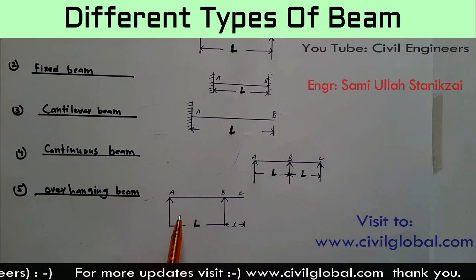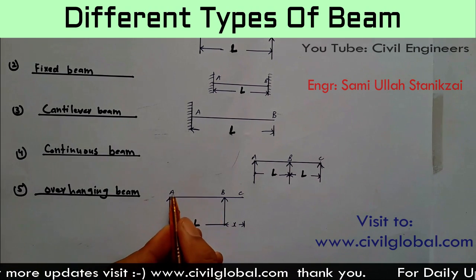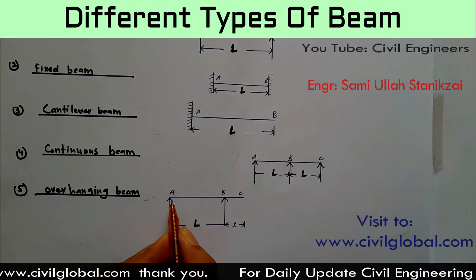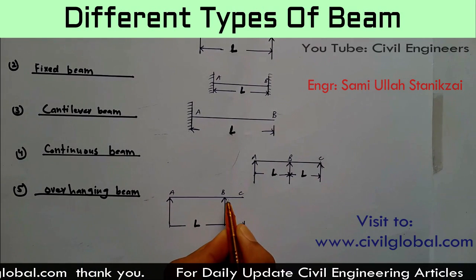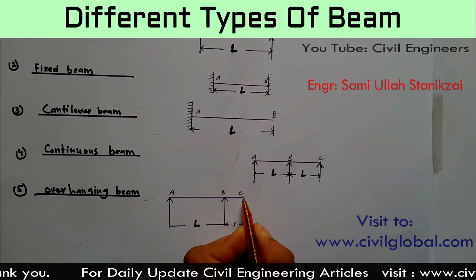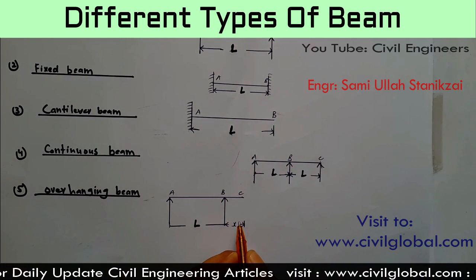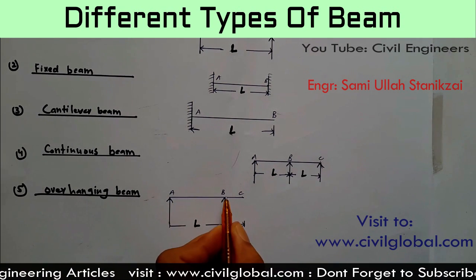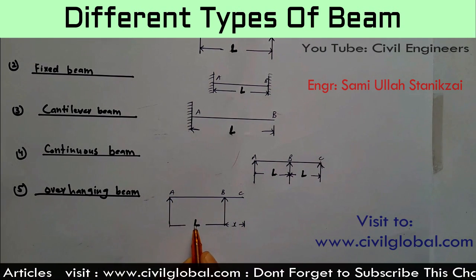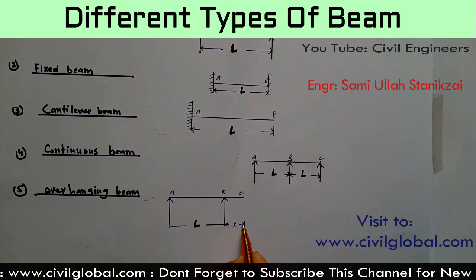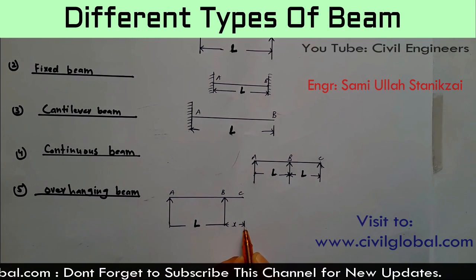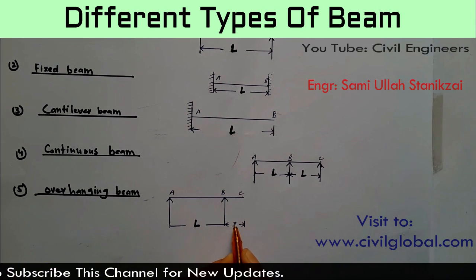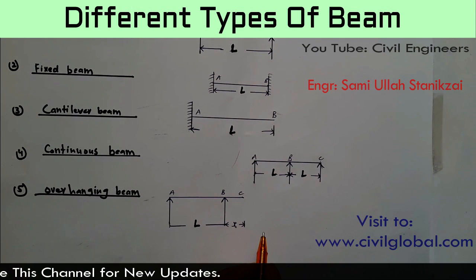The fifth one we have is the overhanging beam. A beam which is supported at two points — A and B — but extends beyond to a point C with no support, is called an overhanging beam. The length between A and B is capital L, and the hanging portion C has length X.